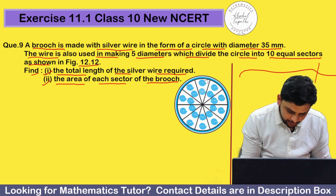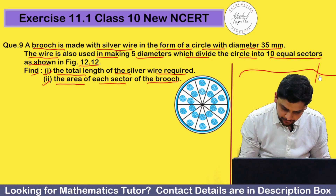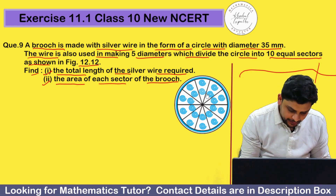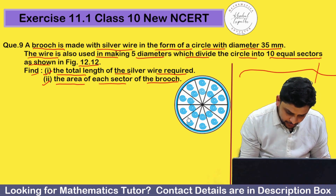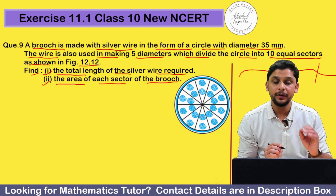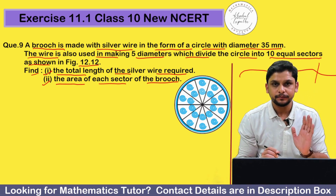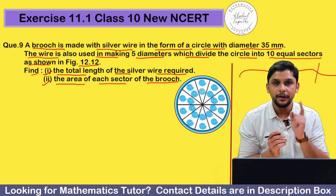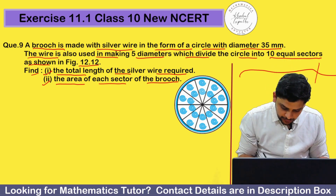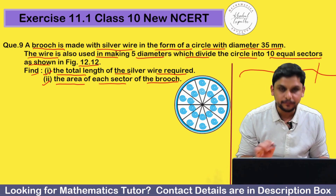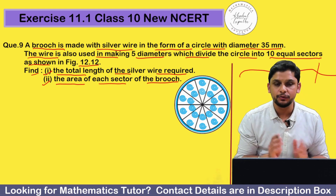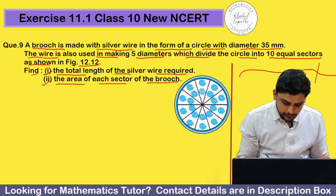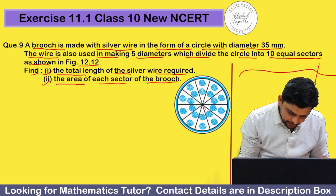First, we will make the circular part of the wire. Then with the remaining wire, we will make 5 diameters — 1, 2, 3, 4, 5 — giving us a total of 10 sectors. We will find two things: number 1, the total length of wire used to make the brush; number 2, the area of each sector.